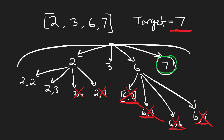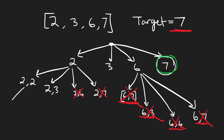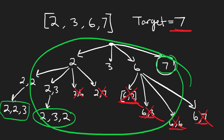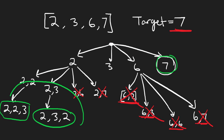Here is where we get duplicates. From two-two we can choose three to get [2,2,3], which sums to seven. But down the two-three branch we could also choose two to get [2,3,2]. Both sum to seven and are identical combinations. So this naive decision tree produces duplicate combinations.